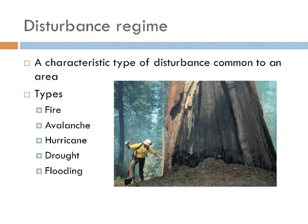A disturbance regime is the characteristic type of disturbance common to a specific area. There are several types, from fire to hurricanes, avalanches, and even drought.